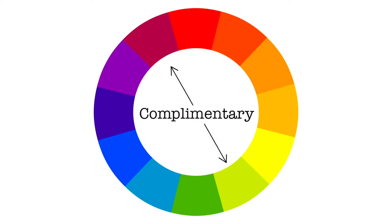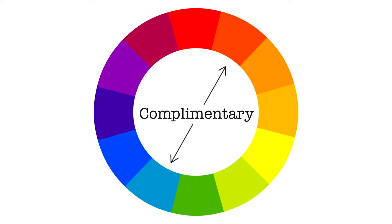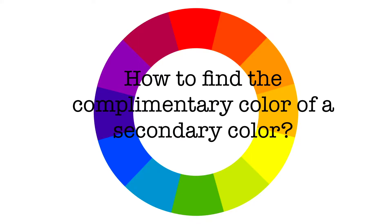Complementary colors are colors that are on the opposite sides of the color wheel. These colors will pop when placed next to each other. When trying to figure out the complementary color of a secondary color, you have to figure out what the primary colors are first, and then the remaining primary color will be the complementary one.